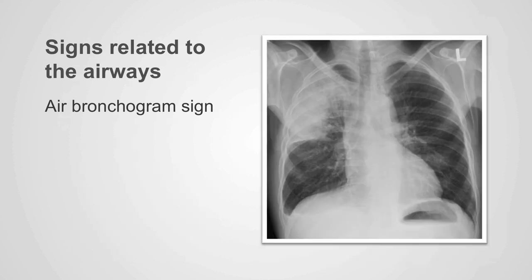This is an example of an air bronchogram. We see the opacity within the right lung. Within the opacity, we can identify these branching tubular black structures, which represent the patent bronchi within the right lung in this patient with a right upper lobe pneumonia.